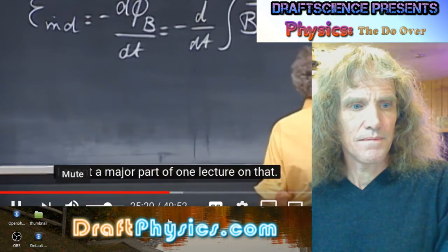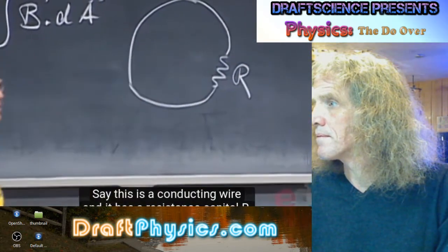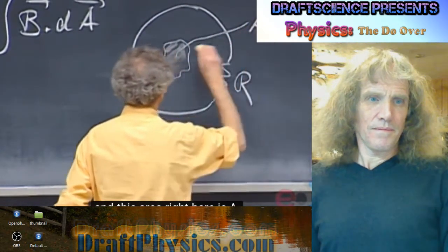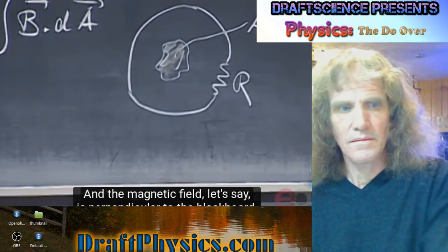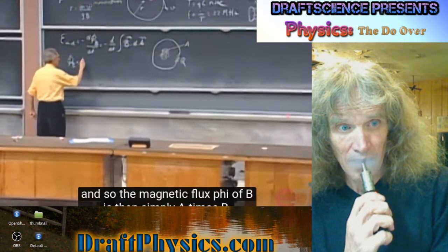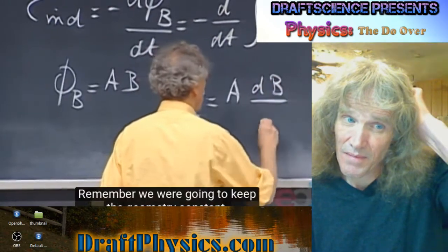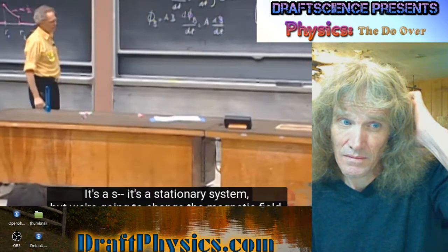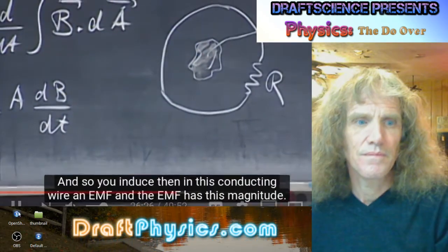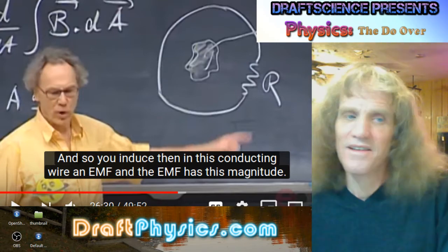Let's first take a stationary loop. Say this is a conducting wire and it has a resistance capital R, the net resistance of the entire wire. And suppose here I have a changing magnetic field and this area right here is A. The magnetic flux phi of B is then simply A times B. It does confuse things a little bit now that he's calling the magnetic field A, but whatever.